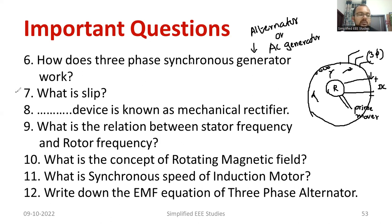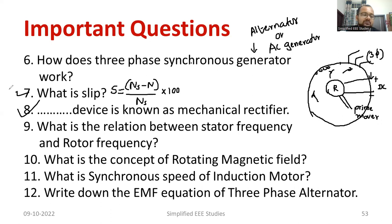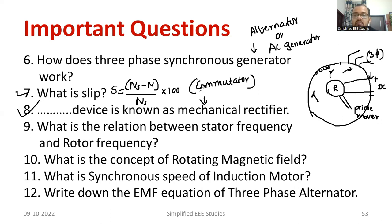What do you mean by slip? Slip is the ratio of the difference between synchronous speed and rotor speed to the synchronous speed, and it is usually expressed as a percentage. Question number eight: Which device is known as a mechanical rectifier? In a DC generator, the commutator is known as the mechanical rectifier. It converts variable voltage and current into direct voltage and current. Similarly, the induction motor is known as a rotating transformer.